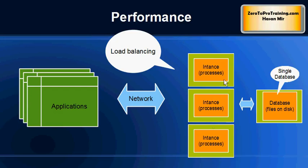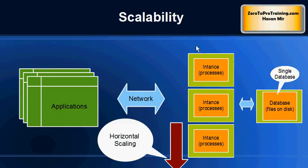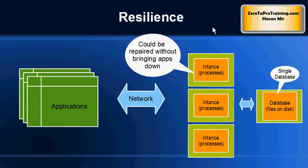Performance comes from load balancing: multiple machines are holding Oracle software, so the load is shared between all these servers, creating better performance. Scalability comes from the fact that you can add more machines to hold Oracle software — this is horizontal scaling, where you are adding more nodes to the existing cluster.